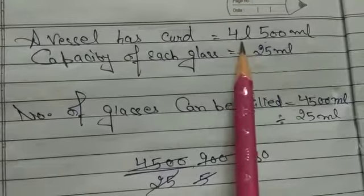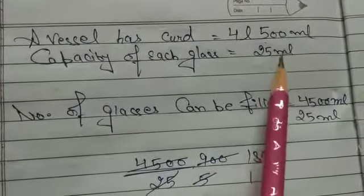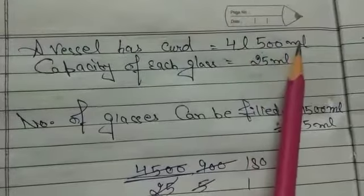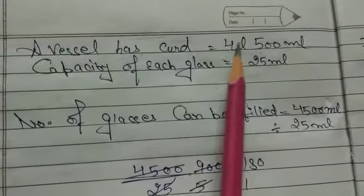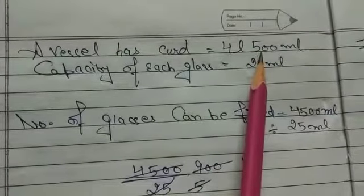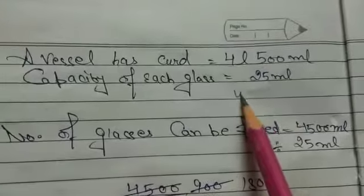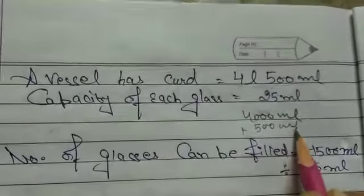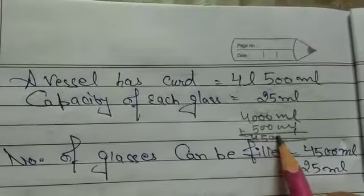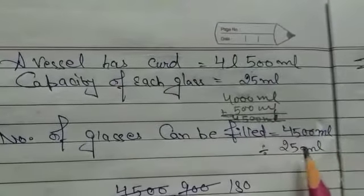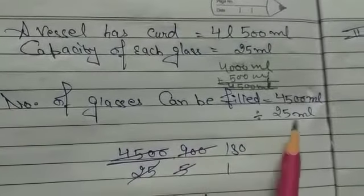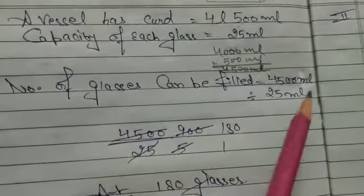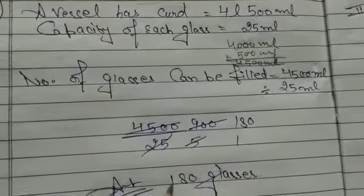To solve this, we need to convert everything to milliliters since both quantities must be in the same unit. 4 liters equals 4000 milliliters. Adding 500 milliliters gives us 4500 milliliters. Dividing 4500 milliliters by 25 milliliters per glass, after division and simplification, the answer is 180 glasses.